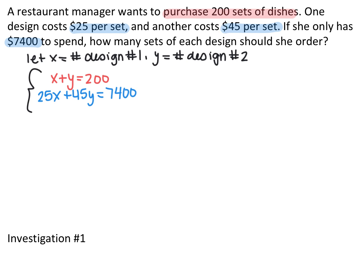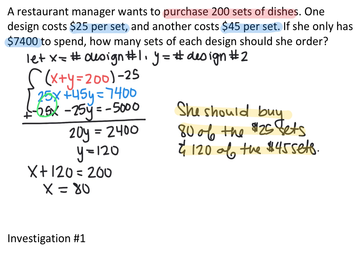She wants a total of 200, so how many of the first plus how many of the second has to equal 200, and the costs have to add up to 7,400. I chose elimination and multiplied the top equation by negative 25, getting negative 25x minus 25y equals negative 5,000. Adding them together, the x's cancel, giving 20y equals 2,400, so y equals 120. Plugging that into the first equation gives x equals 80. So she should buy 80 of the $25 sets and 120 of the $45 sets.